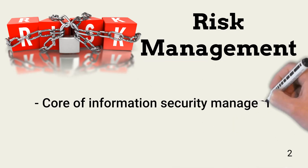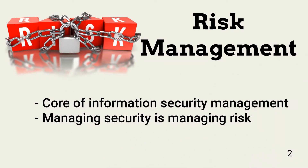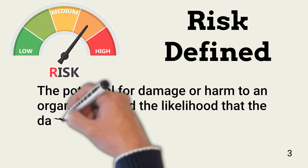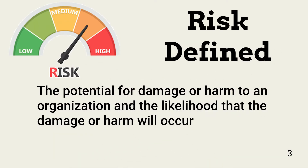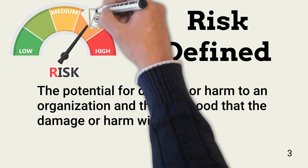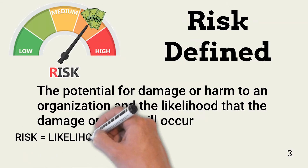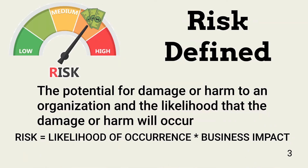Managing information security is all about managing risk. Understanding the risk associated with critical systems and sensitive information is essential for implementing the needed controls. It's important to properly define risk before we look at how to manage it. Risk is the likelihood that a threat will compromise or destroy an information asset, and the damage that will occur if that happens. Risk should be thought of as loss of profits, a diminished bottom line.